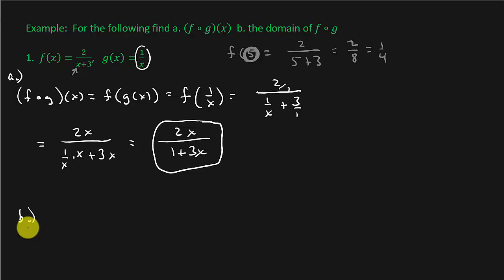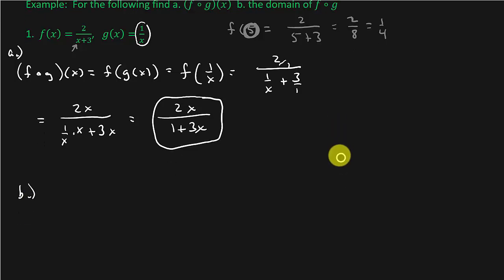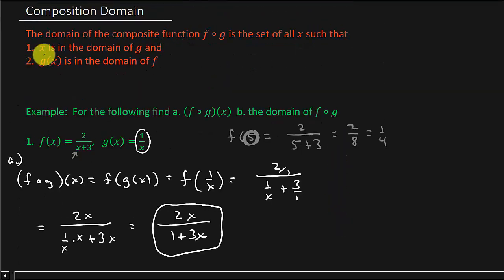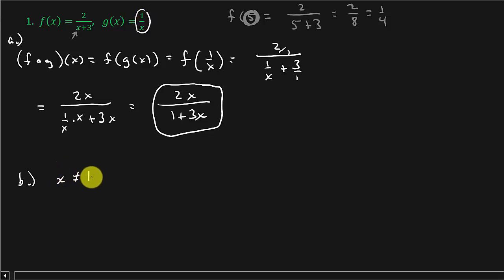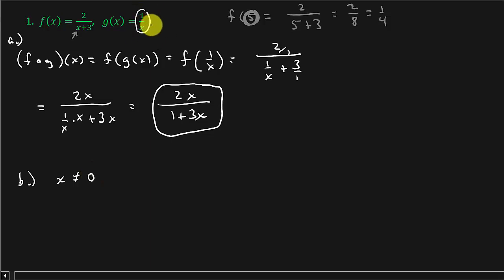Now let's look at part b, the domain. Remember what it says: x is in the domain of g. Let's look at g — g is one over x. So we know for g of x, x cannot equal zero, because that would make g undefined.